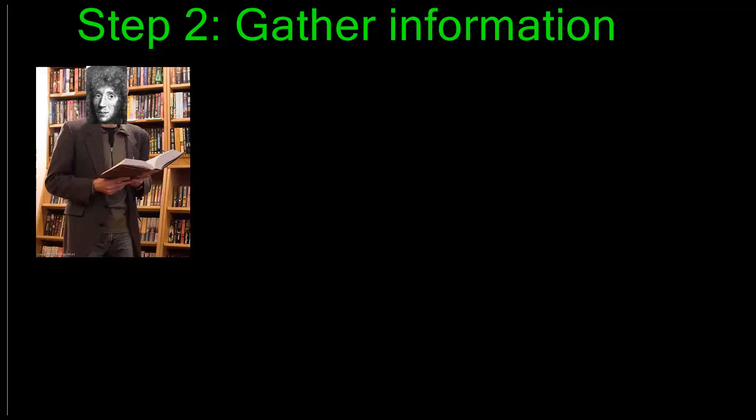Step 2 of the scientific method involves gathering information or doing research. You might go on the internet and do some research on a reputable web page in order to find information to answer your question. But in Francesco Redi's time, he couldn't really go on the internet. So he might have to do some reading or perhaps go out into the field and do his own research.